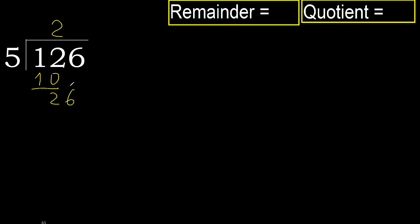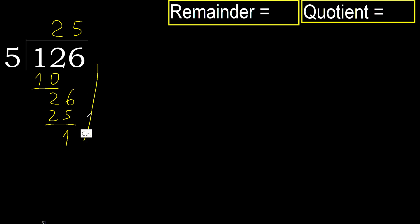Next, 26. 5 multiplied by 6 is greater; multiplied by 5 is 25, which is not greater. Subtract. Next, there is no more number, therefore finish.